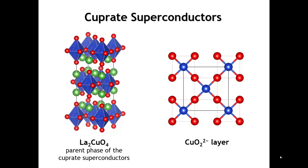The compound we see here on the left, lanthanum copper oxide, has a layered perovskite structure. If you replace some of the lanthanum with a divalent cation like strontium or barium, it oxidizes some of the copper from plus 2 to plus 3, and it triggers superconductivity. When that was first discovered back in the late 1980s, it sparked a real frenzy of activity.